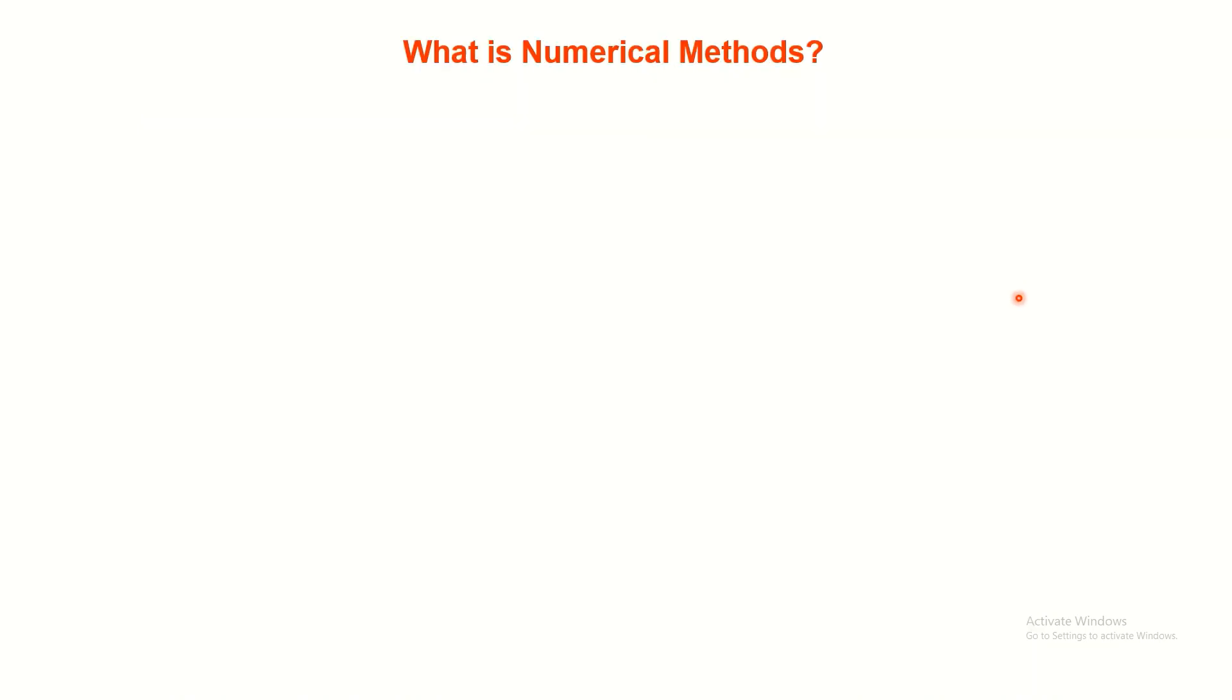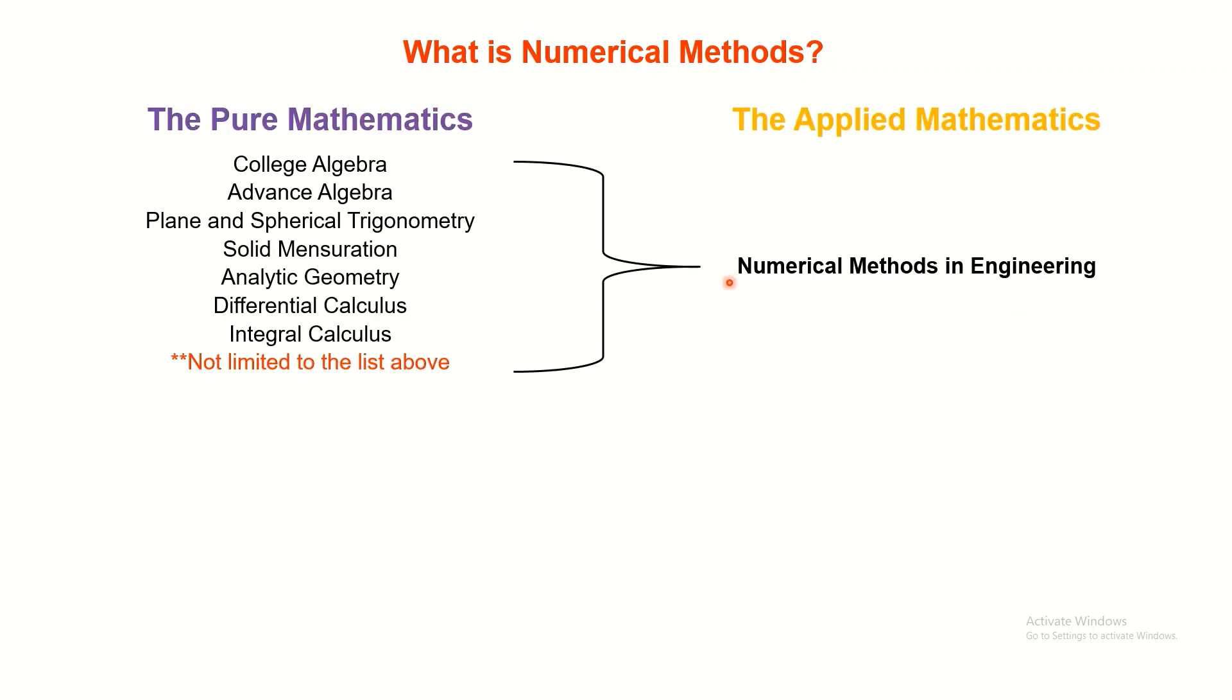So what really is a numerical method? Generally speaking, numerical method is the consolidation of pure mathematics as one subject. It is the study of algorithm or process that utilize the numerical approximation to solve mathematical problems. Yes, you heard it right. We are going to assume a lot of things within the subject since it is an approximate solution of a mathematical problem. I can say that most of the solution under the pure math are exact solutions, while numerical methods is one of the approximate solution to solve alternatively a mathematical problem.